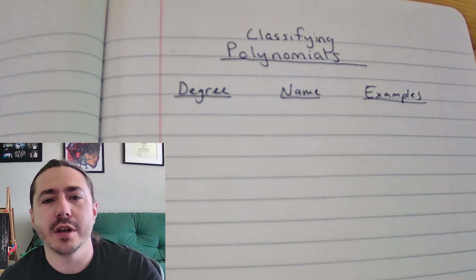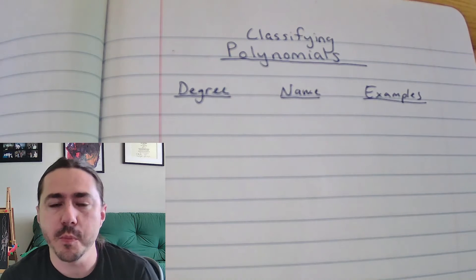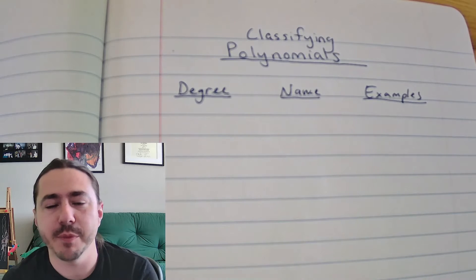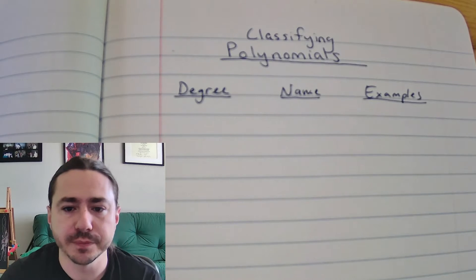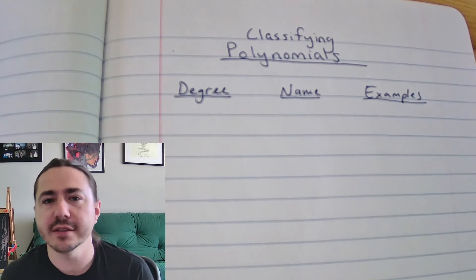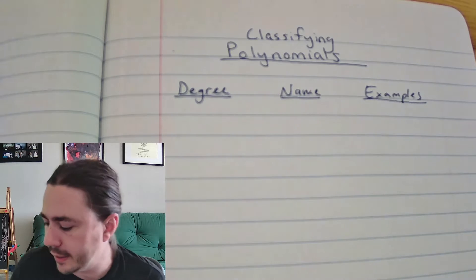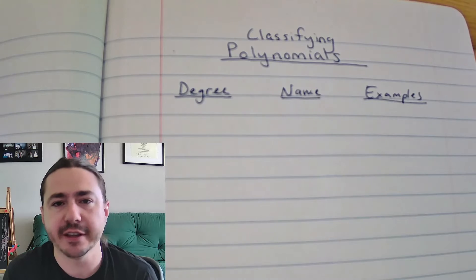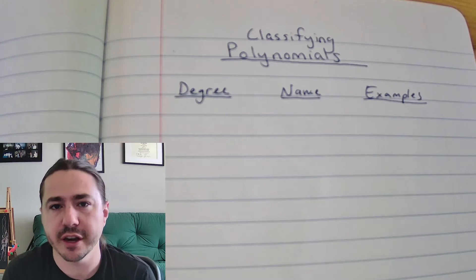Hey y'all, I just wanted to go over a few things and do a little mini review with you before you jump into those practice problems posted on Schoology. There are two ways that you can classify polynomials, and each polynomial has a specific name based on two different characteristics.